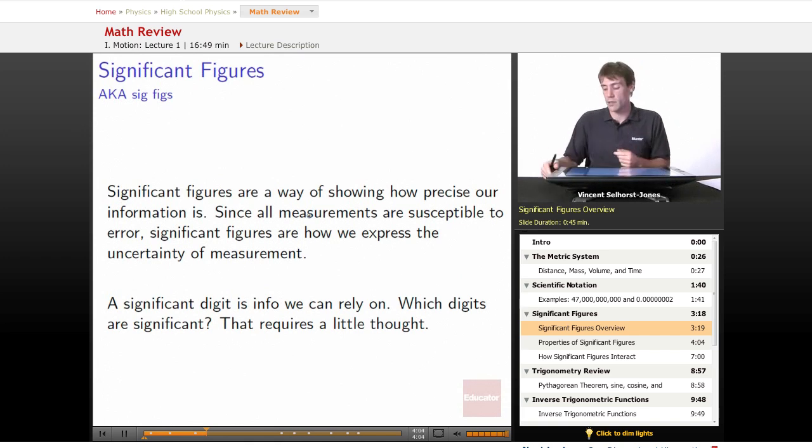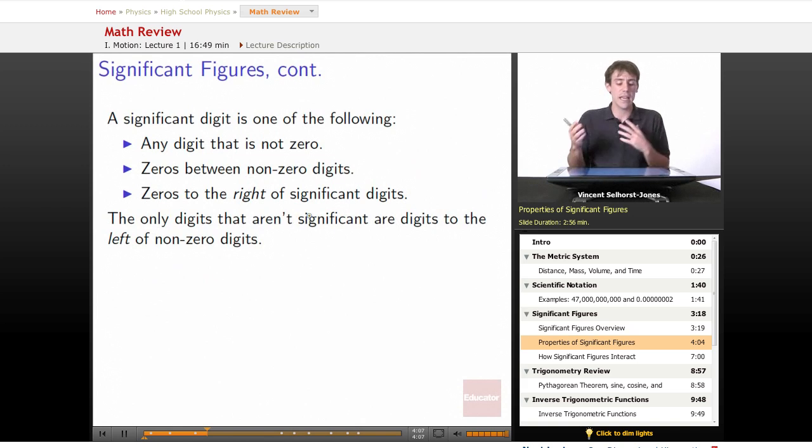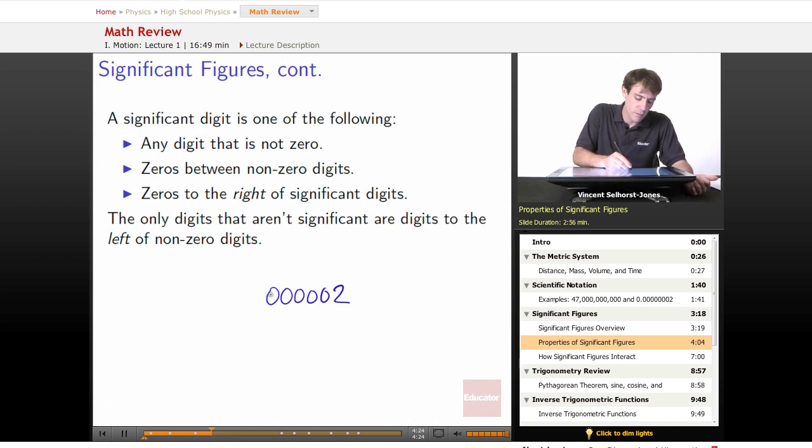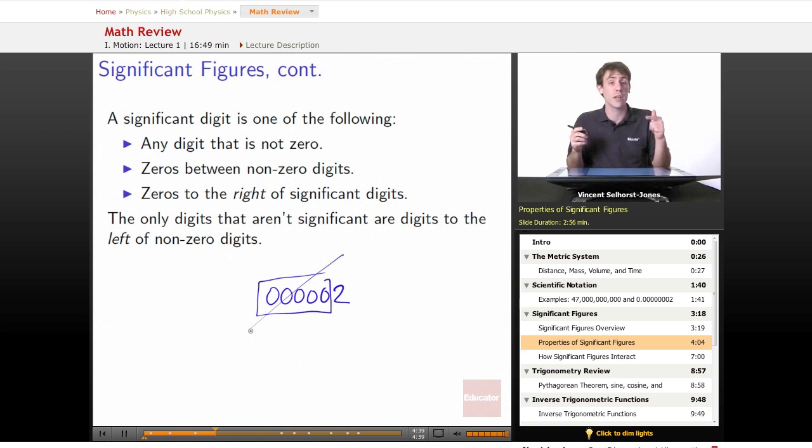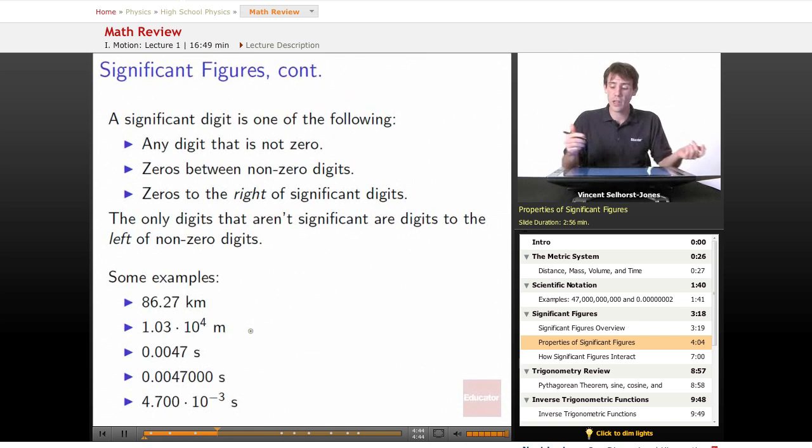Which digits are significant? That requires a little thought. A significant digit is: any digit that is not a zero, zeros between non-zero digits, and zeros to the right of significant digits. The only digits that aren't significant are zeros to the left of non-zero digits. If I wrote two and then a bunch of zeros in front of it, that's the exact same thing. There's no way to measure the difference. So there's no significance in those zeros. This would have one significant digit, one sig fig.